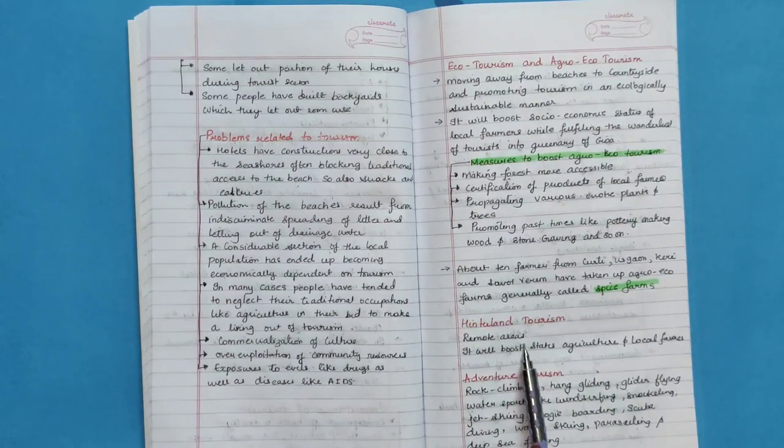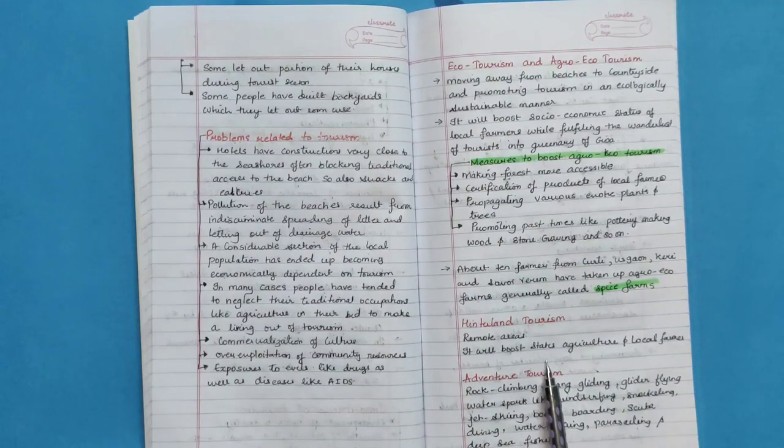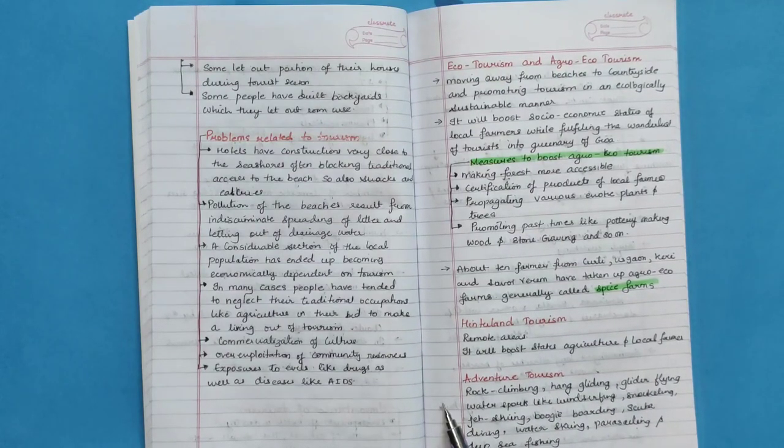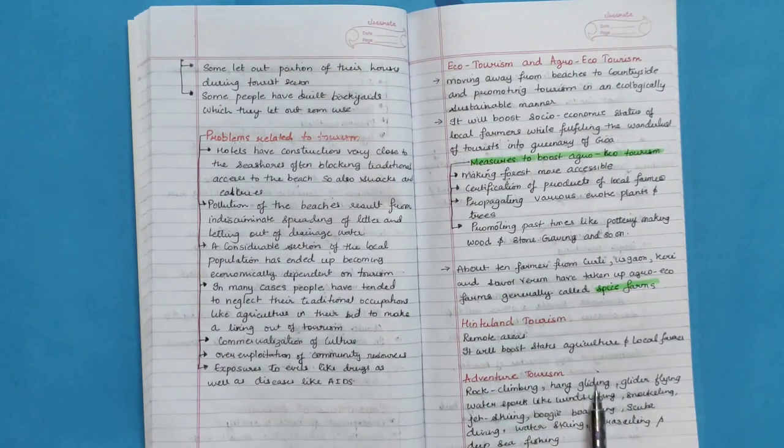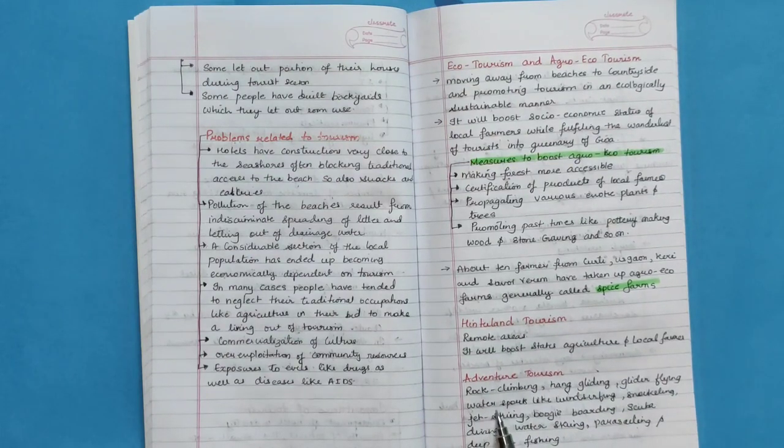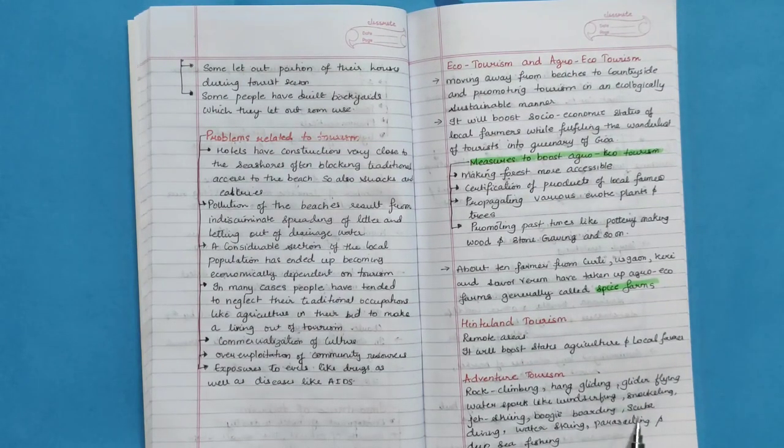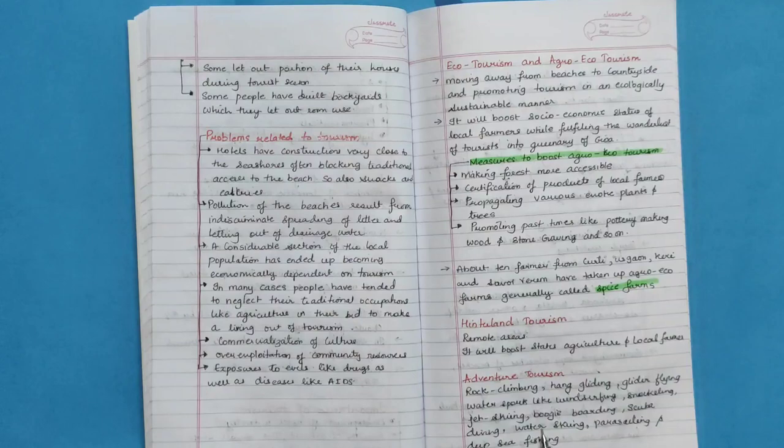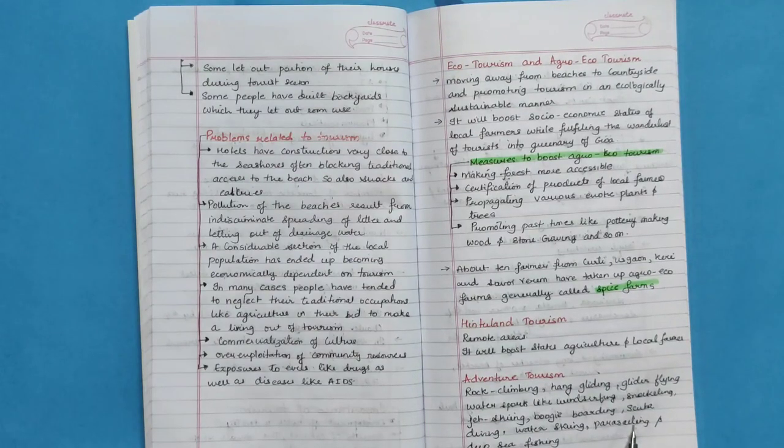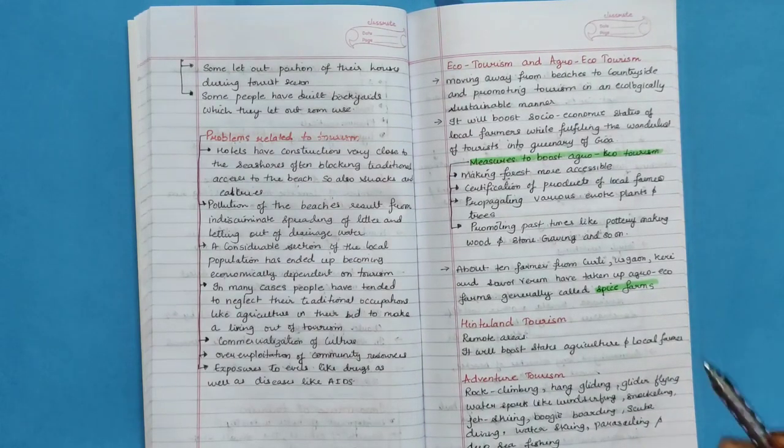Interland tourism in remote areas will boost state's agriculture and local farmers. Adventure tourism: rock climbing, hang gliding, glider flying, water sports like windsurfing, snorkeling, jet skiing, boogie boarding, scuba diving, water skiing, parasailing and deep sea fishing.